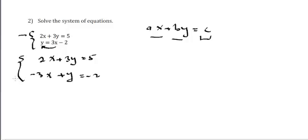So now, just to make sure that our equations are ordered properly, we have 2x plus 3y equals 5, minus 3x plus y equals minus 2. Then we turn on the calculator.